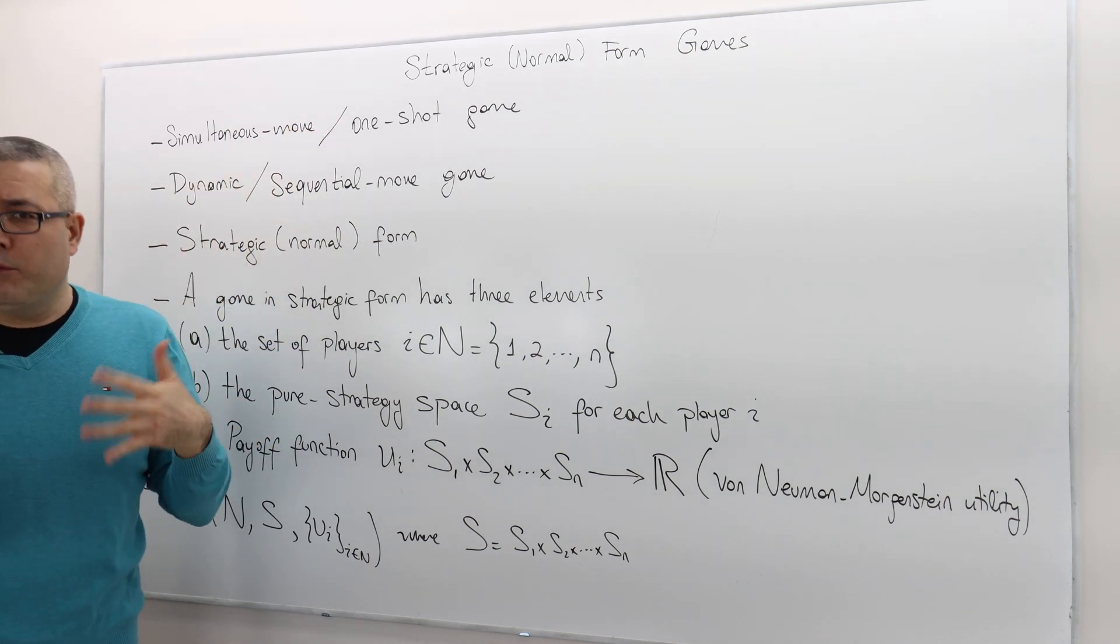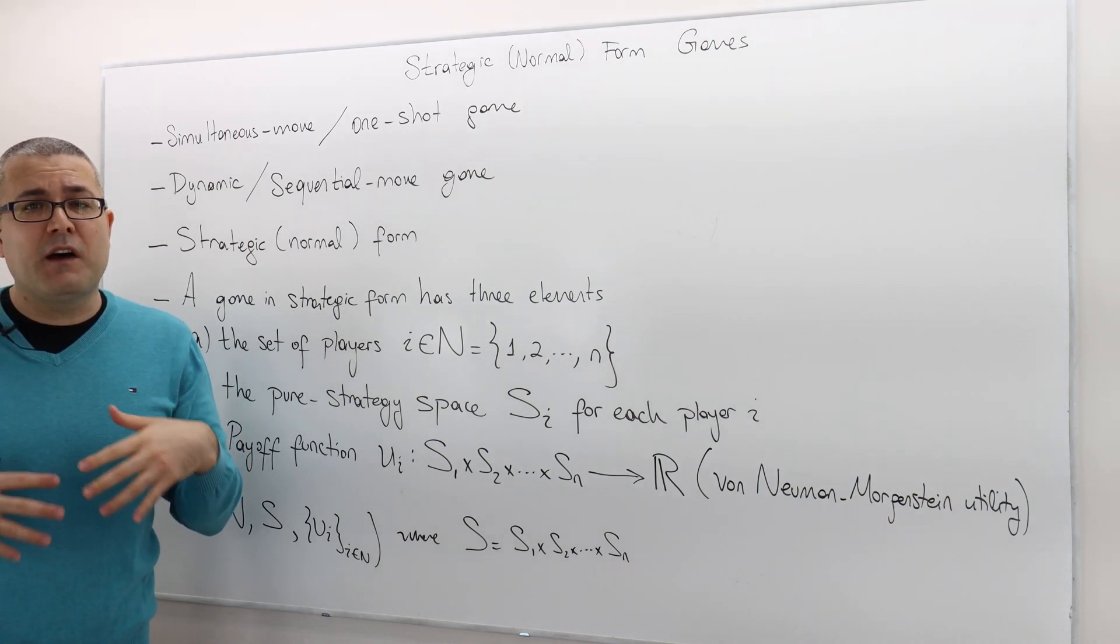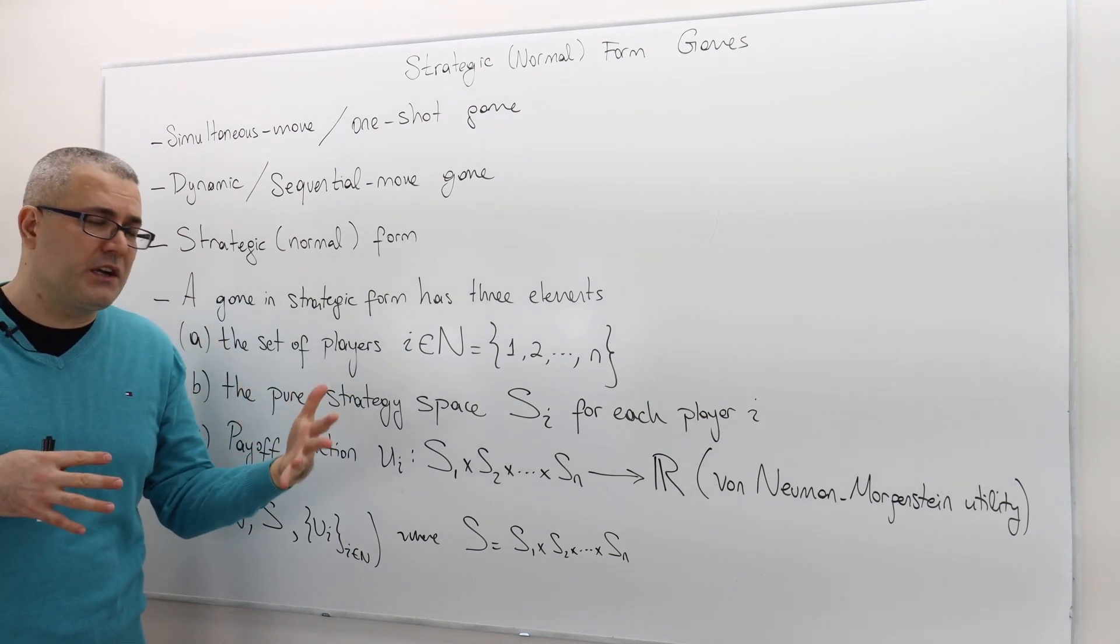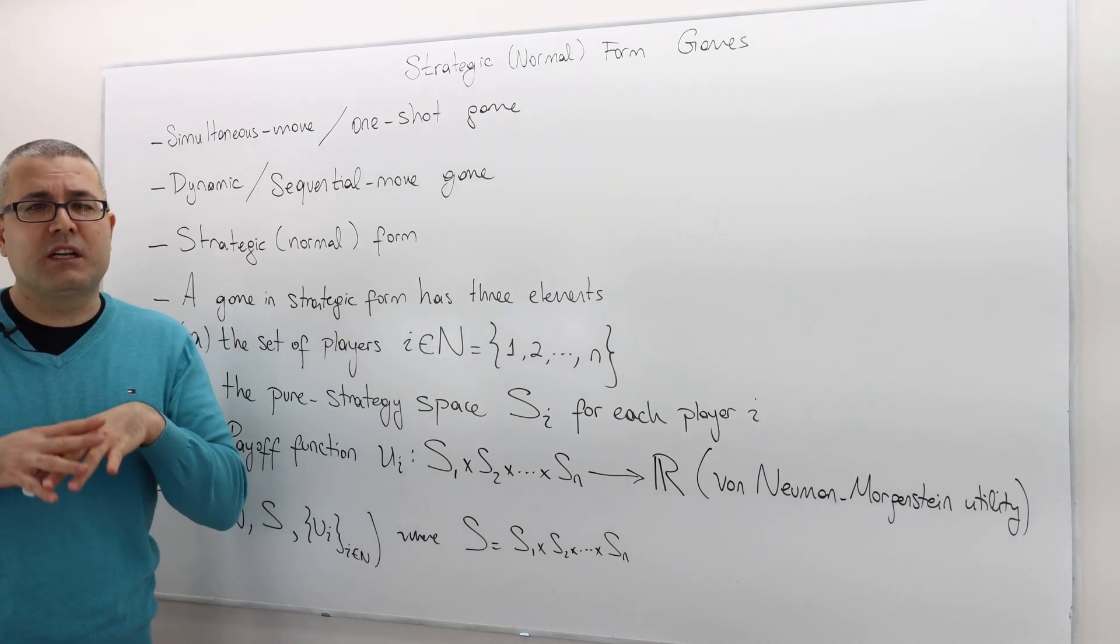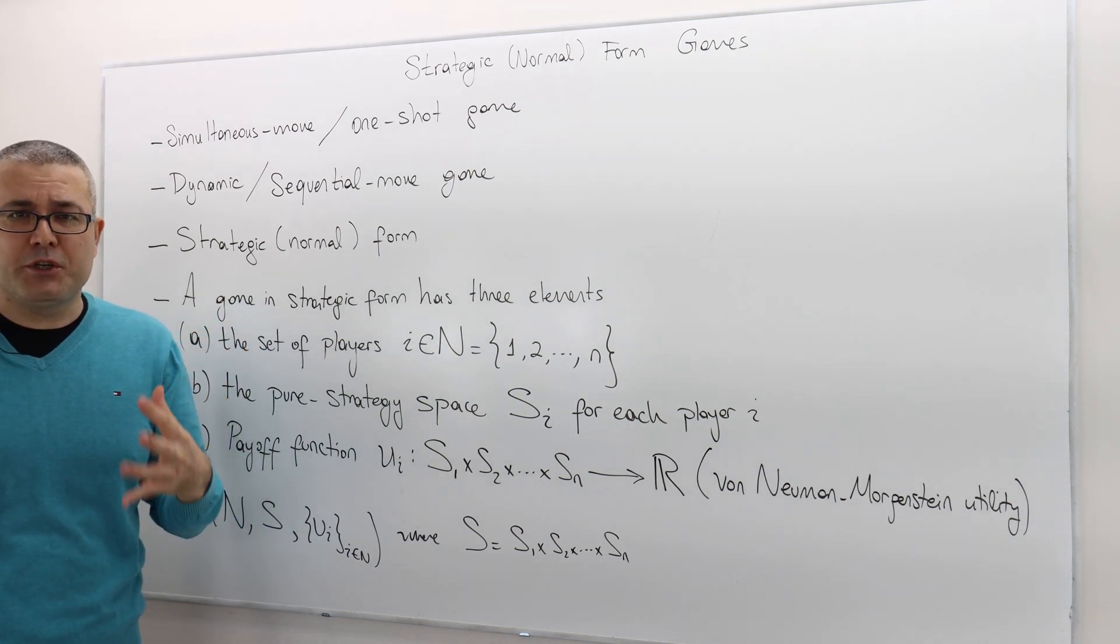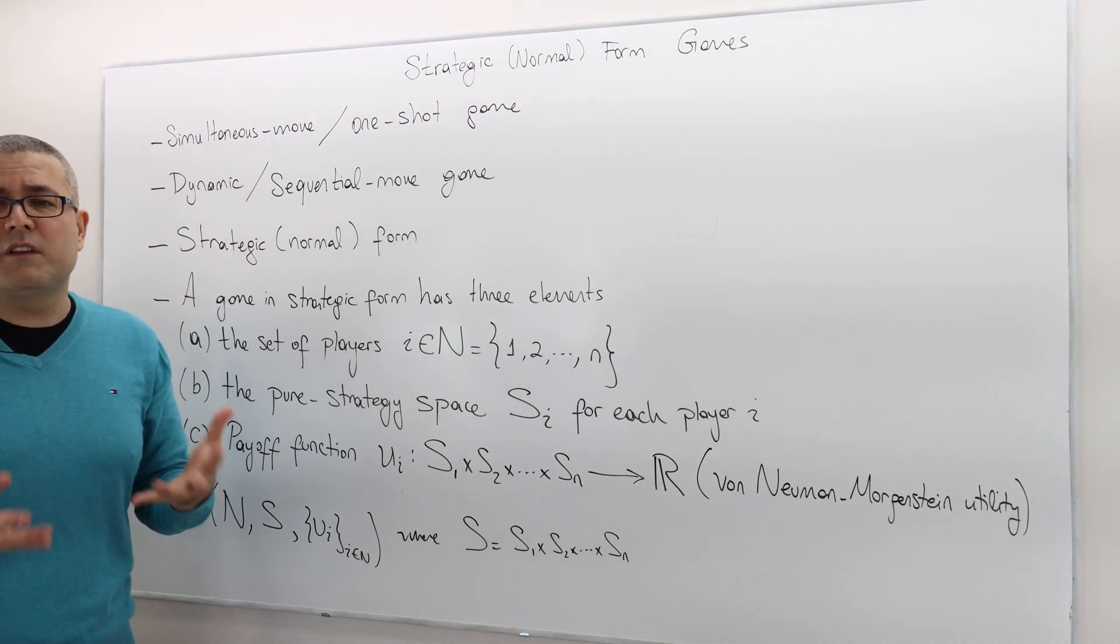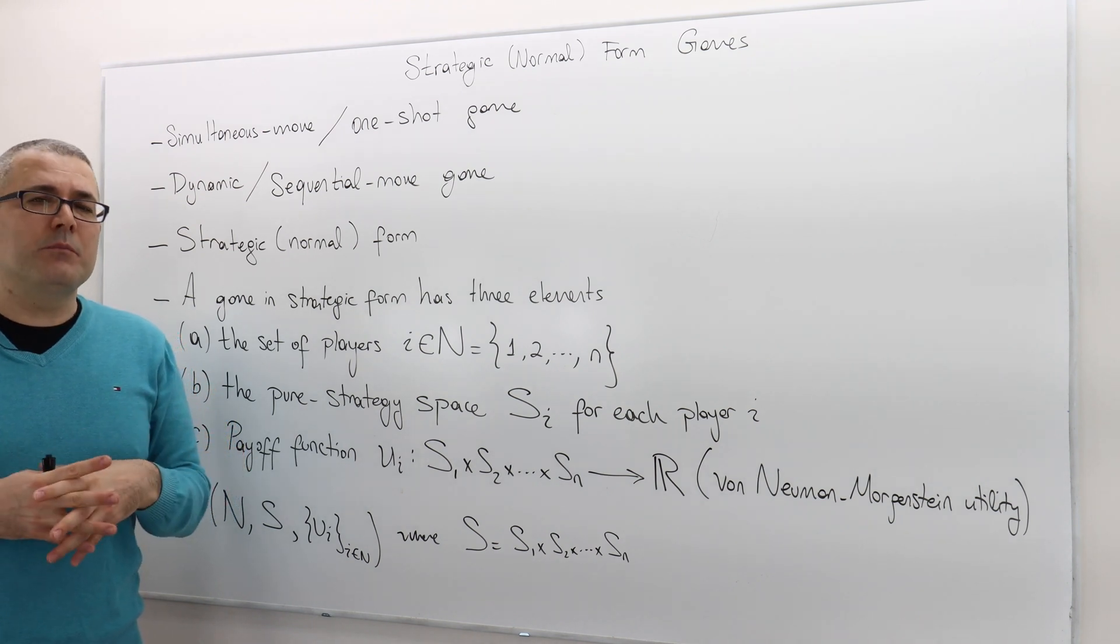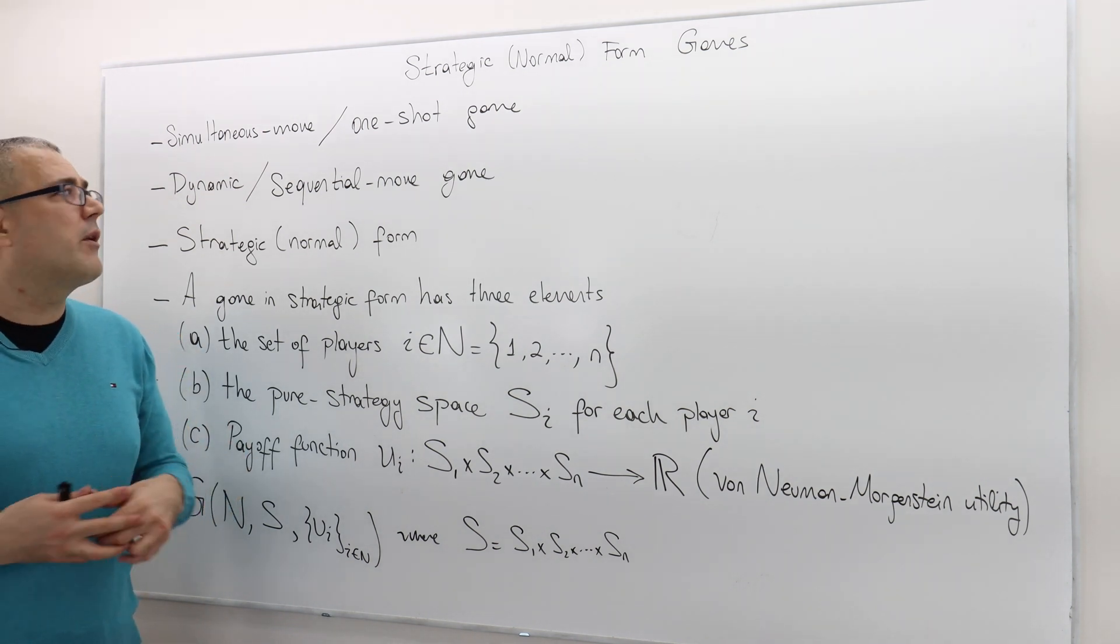What is the difference between these two? A game is simultaneous move game or one-shot game if there is no protocol that specifies or governs who will move first. Which player is first mover, which player moves second. So these information are not given to us in the description of the game. If this is the case, then we call it simultaneous move game. Some games are literally simultaneous, meaning players are moving exactly at the same time.